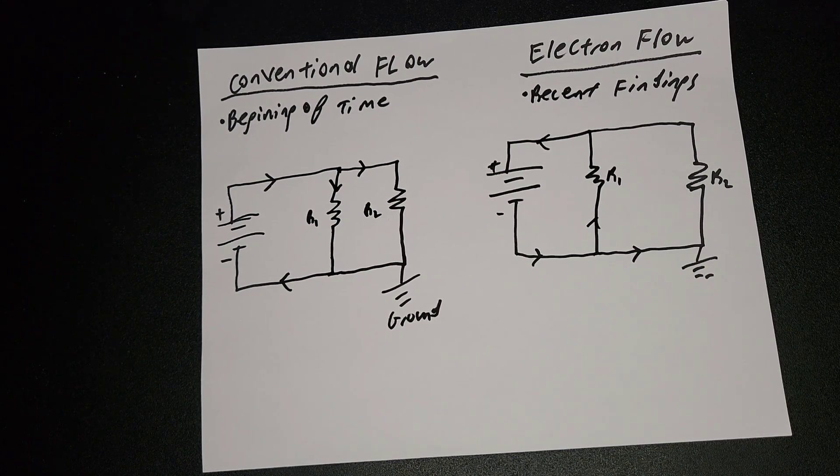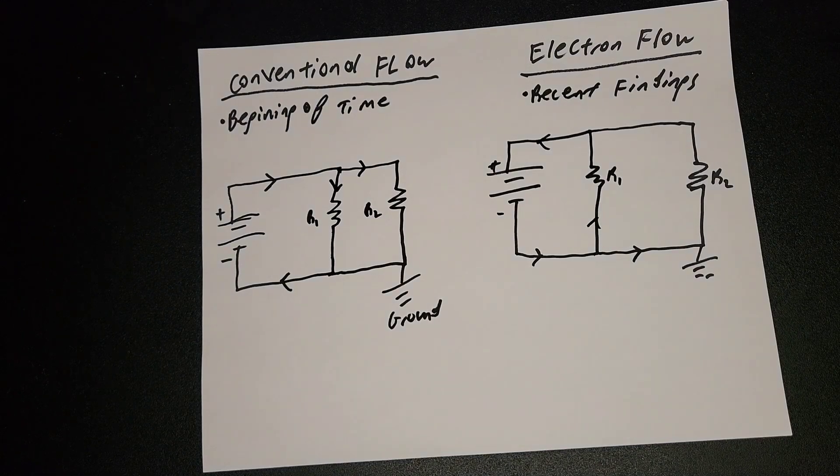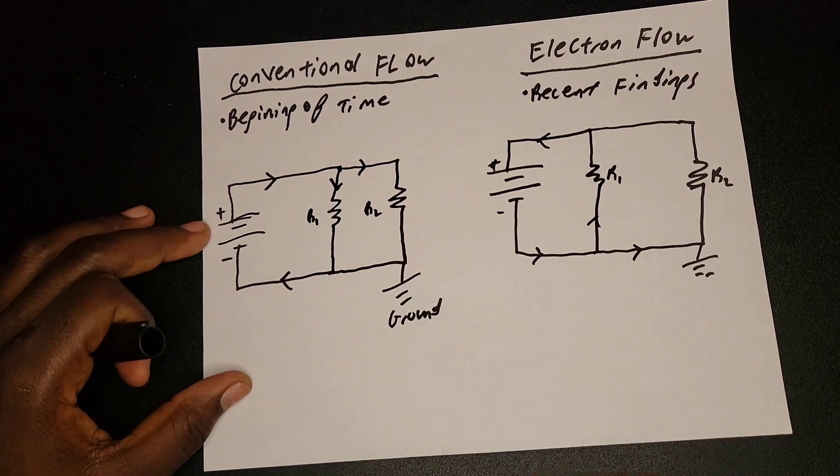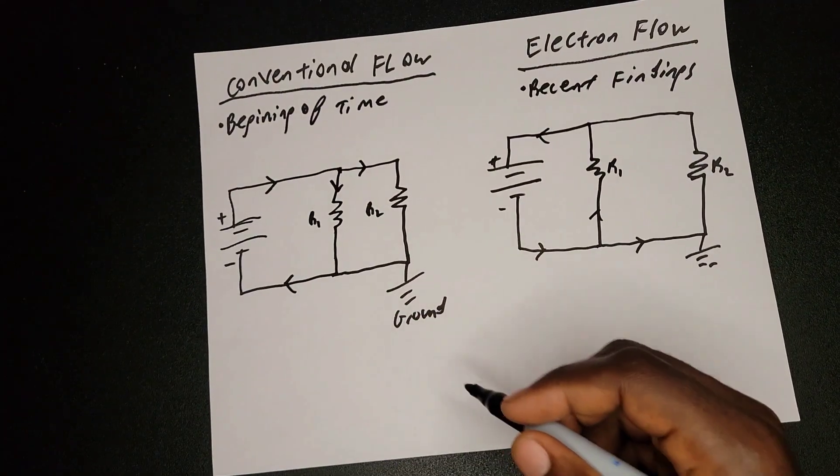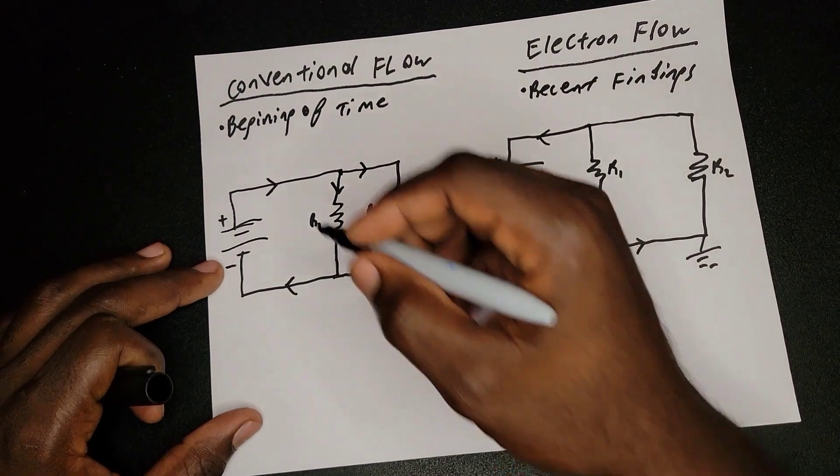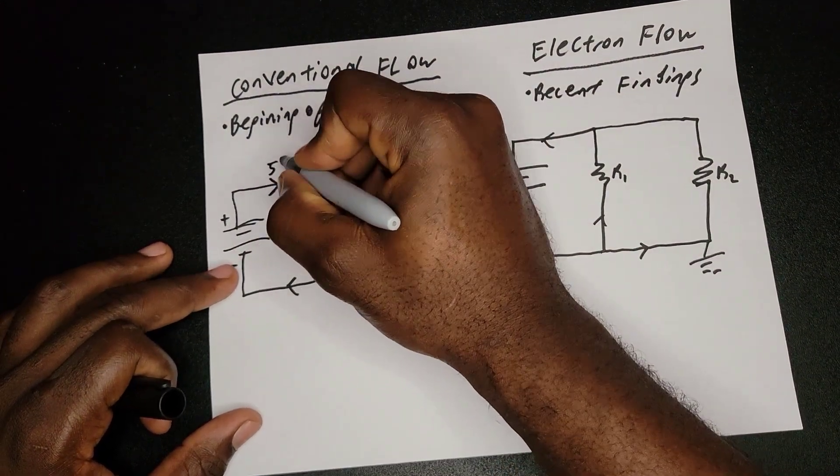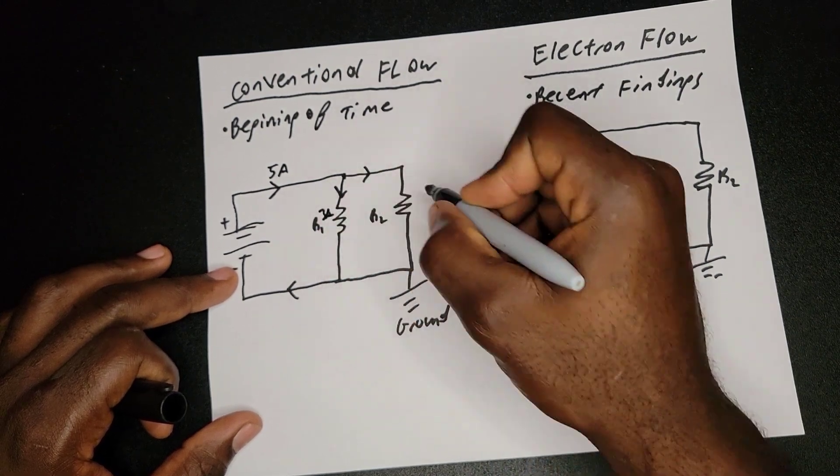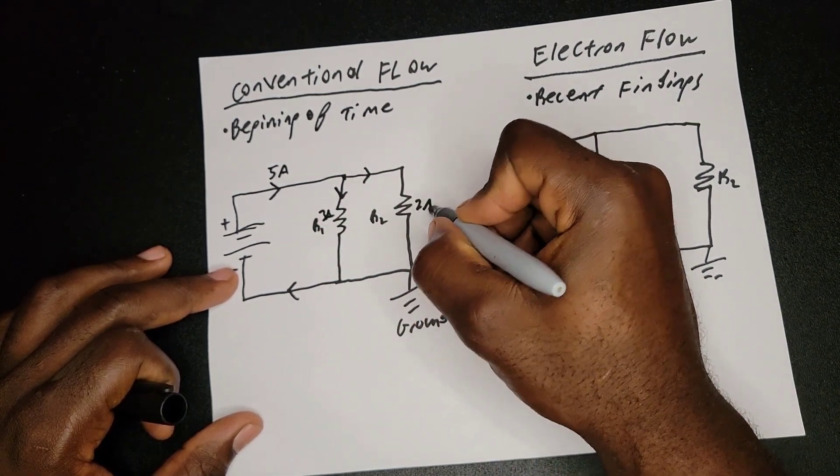But it doesn't really change the operation of how current works. Because if you have, let's say we have five ampere, and three amp will flow in this resistor and two ampere will flow in this resistor.